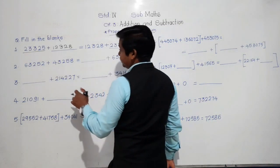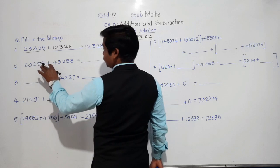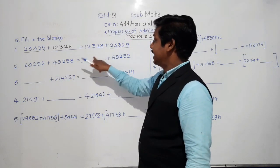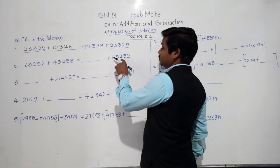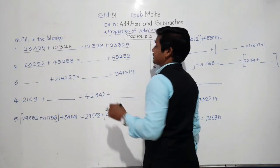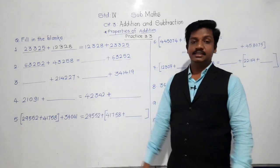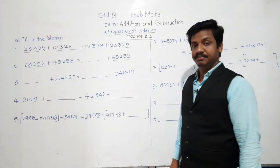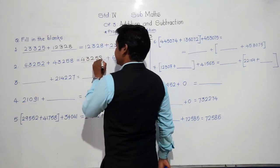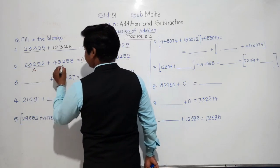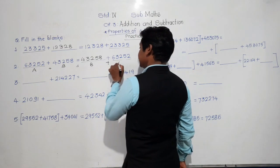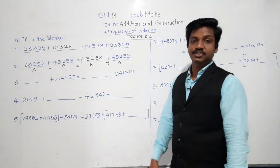Second example: 63,252 plus 43,258 equals dash plus 63,252. Since 63,252 appears on both sides, the missing number is 43,258. So A plus B equals B plus A — the sequence is changed. This is order property.